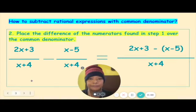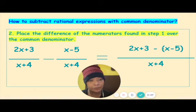For example, this one, I just copied the denominator. Pansin nyo po, this is x minus 5. I put it in parentheses kasi magbabago po yung sign yan. You multiply negative times positive is negative x. Negative times negative, this will become positive 5 after removing the parentheses.